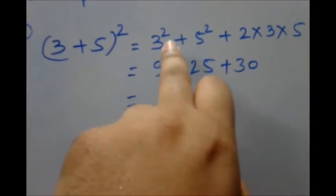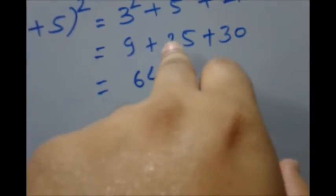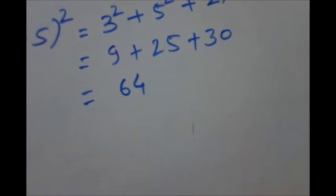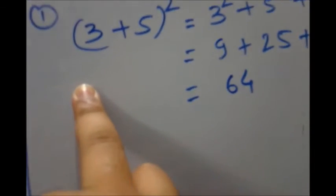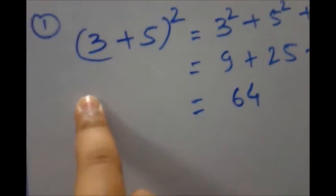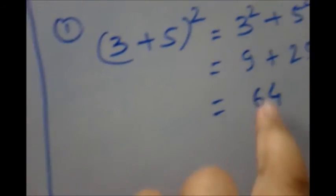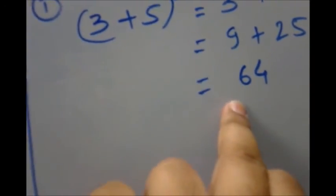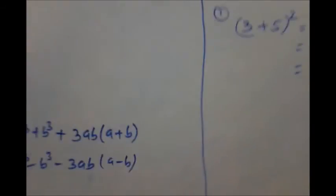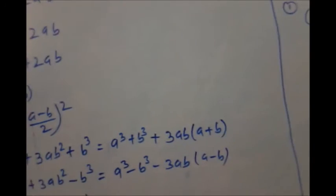So (3 + 5)² = 3² + 5² + 2 × 3 × 5 = 9 + 25 + 30 = 64. You can verify it: 8² = 64, and (3 + 5)² = 64. So it is correct!